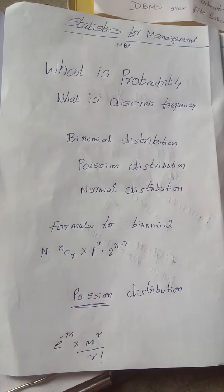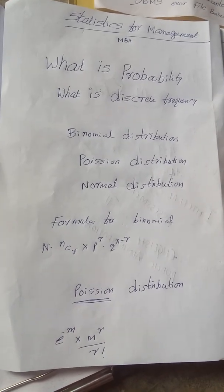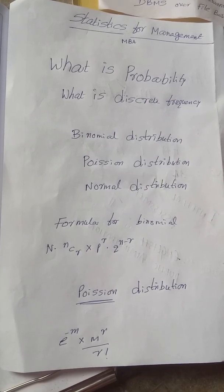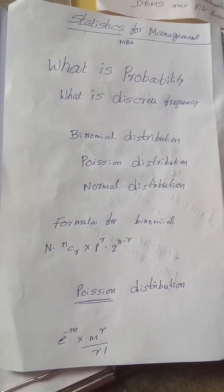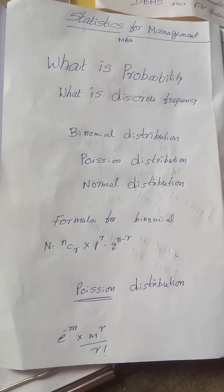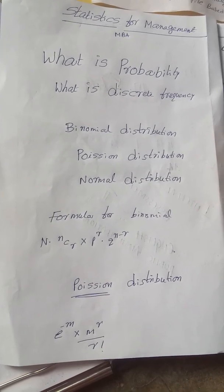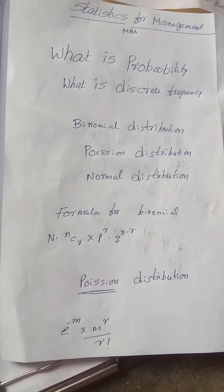Here MBA students, in units 1 and 2 we have the topic of probability. There we have theorems like addition theorem, multiplication theorem, and we need to learn about discrete probability distributions where you will find a variable and a frequency.